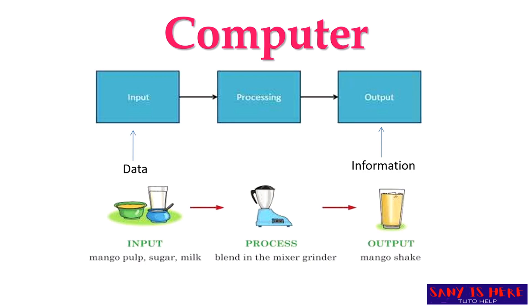For example, mango, milk — these are all data we are putting in. The process is mixing. After mixing, we will get the mango shake as output — that is the information. Through this image you can easily understand what a computer does.